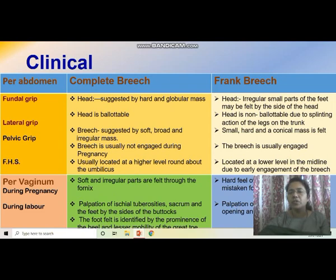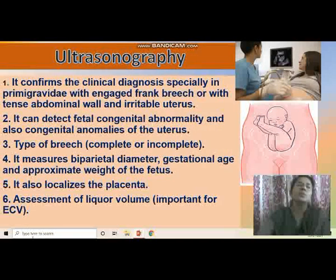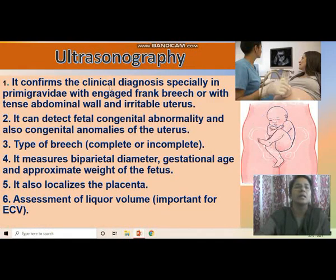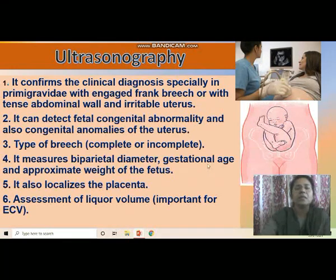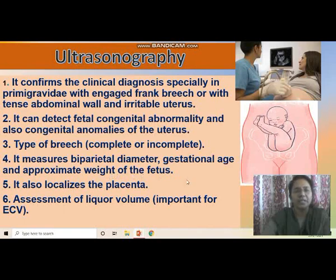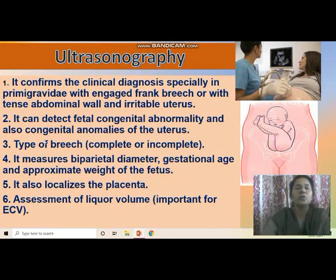Ultrasonogram confirms the clinical diagnosis, especially in primigravida with engaged frank breech or with a tense abdominal wall and irritable uterus. It can detect fetal congenital abnormalities and congenital anomalies of the uterus. The type of breech — complete or incomplete — can be assessed. It measures biparietal diameter, gestational age and approximate fetal weight, localizes the placenta, assesses liquor volume, and is important for external cephalic version.